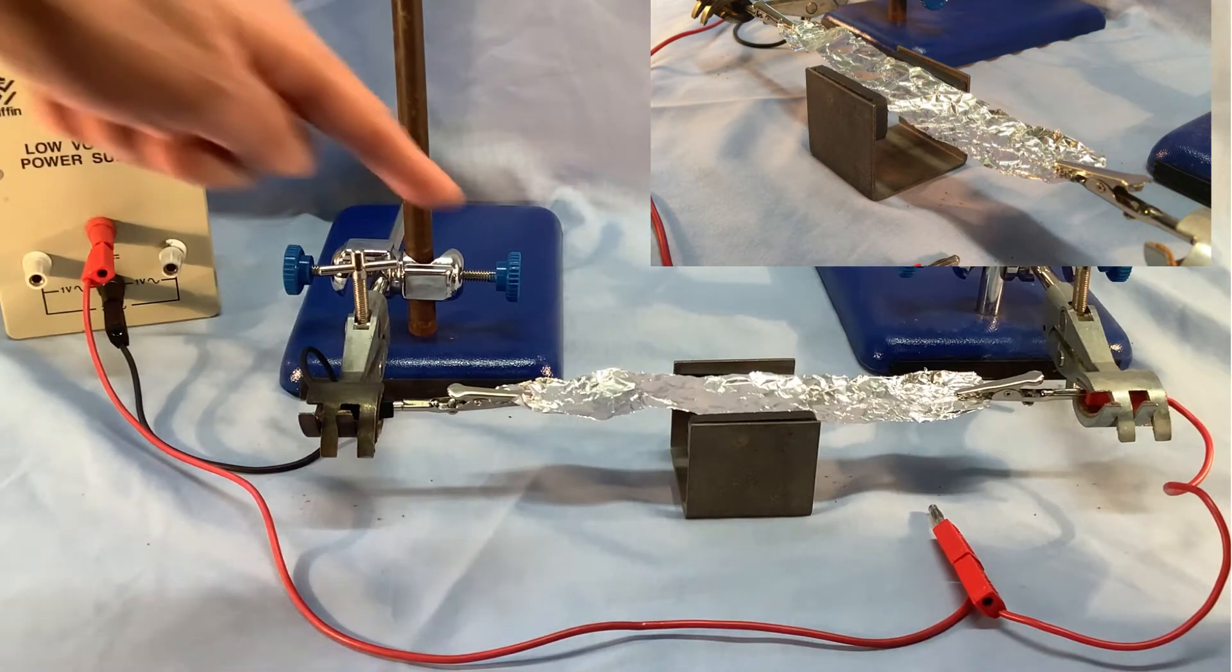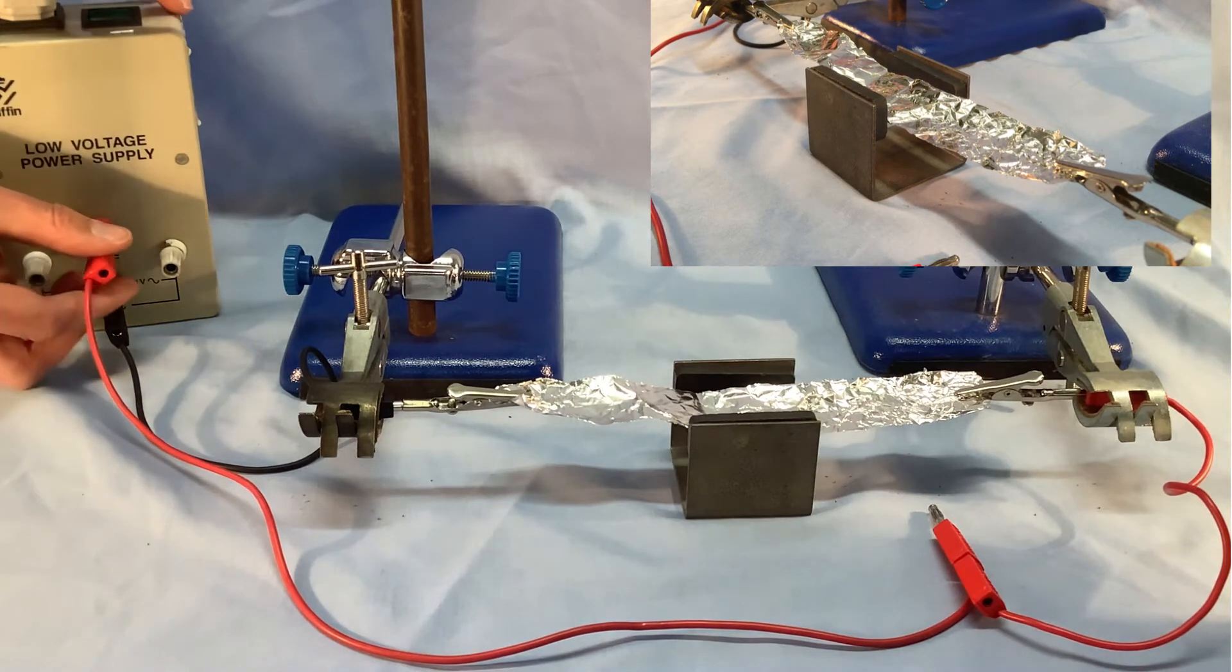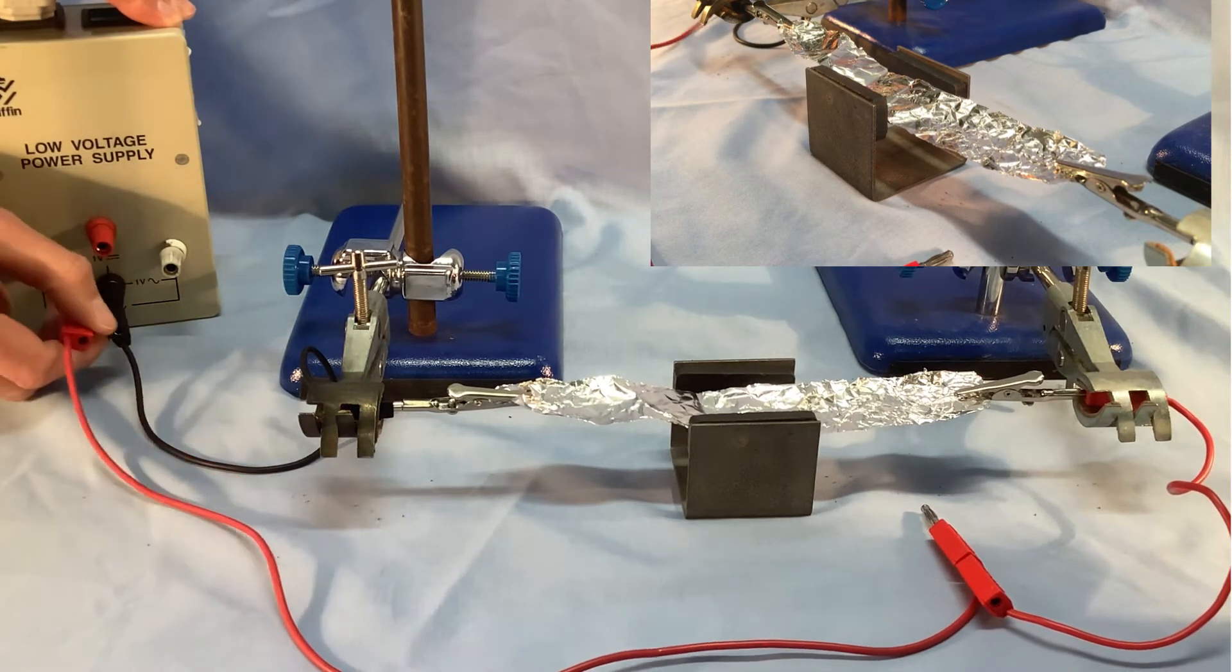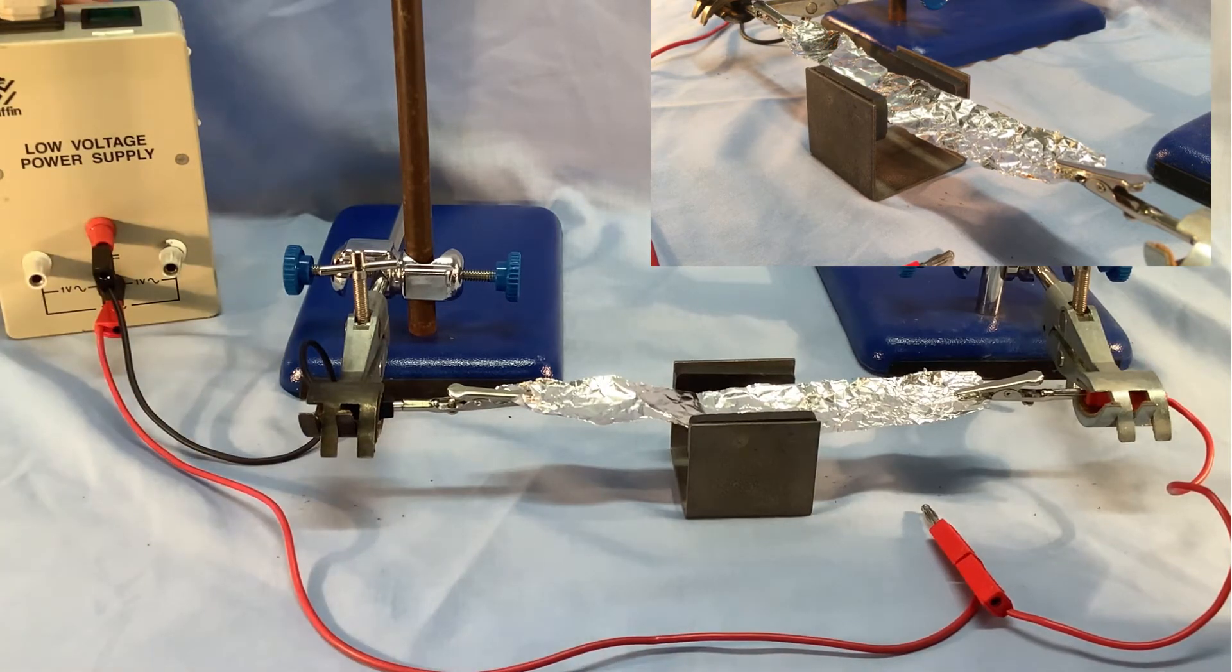So the other thing that I can do is leave the magnets as they are - so remember that was moving up or experiencing force up. If I now swap around the connections to the power supply so that I make the current flow the other way around, and now